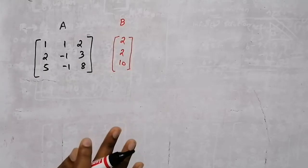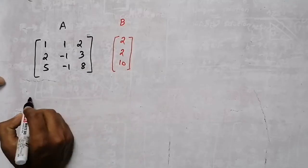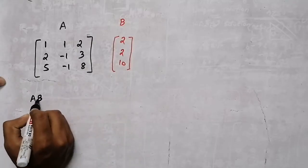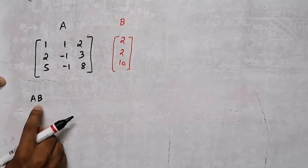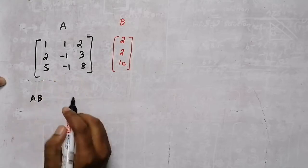Now, how do we do this? This is the A|B augmented matrix. We set up matrix A.